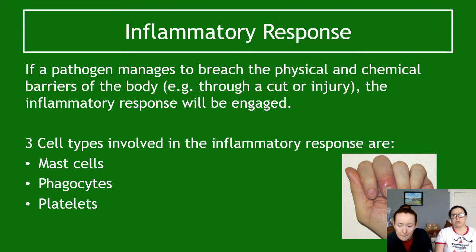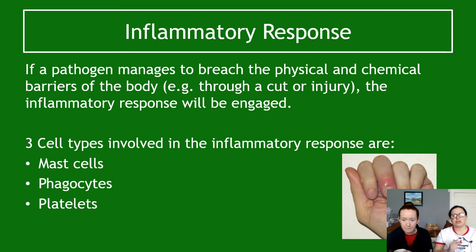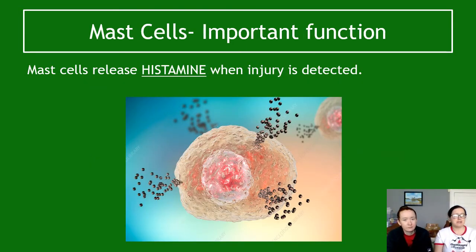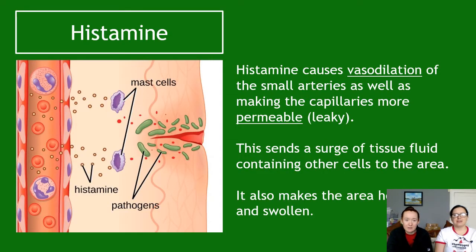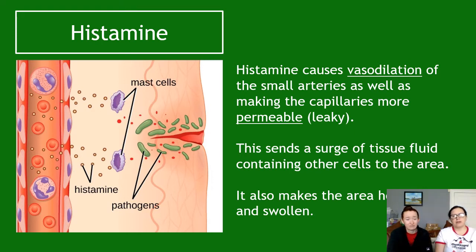This is part of the non-specific immune response and is the part most likely to be examined. The first thing that happens when you're hurt is that mast cells recognise the injury and release an important chemical called histamine. Histamine causes vasodilation of your arteries — it makes the blood vessels become wider. It also makes the capillaries more permeable, so more things can leak out into the damaged area. This allows tissue fluid to leak into the damaged area, causing swelling and heat. You can see from the diagram that histamine is released by mast cells and binds to capillaries.